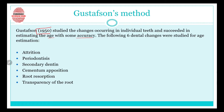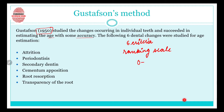In the year 1950, Gustafson came up with a method for estimating the age of a person using the teeth. He proposed six criteria based on the changes that occur in the teeth with age, and he developed a ranking scale. The scale goes from zero to three, and the six criteria are attrition, periodontosis, secondary dentine, cementum apposition, root resorption, and transparency of root.